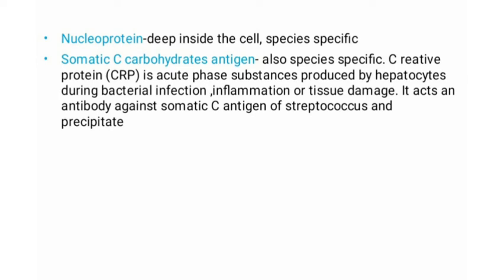If a person infected with S. pneumoniae is already suffering from bacterial infection, inflammation, or tissue destruction, their hepatocytes produce an acute phase substance known as C-reactive protein (CRP). CRP is an abnormal beta globulin produced by hepatocytes that can precipitate with the somatic C carbohydrate antigen of S. pneumoniae. CRP has an antibody-like relationship to the C somatic antigen but is not an antibody — it is an acute phase substance produced in response to infection, inflammation, or tissue damage.